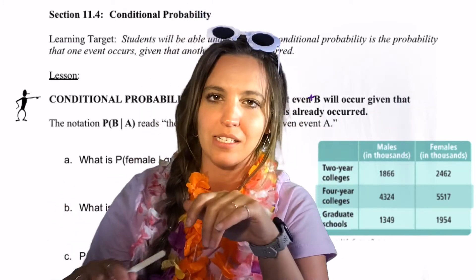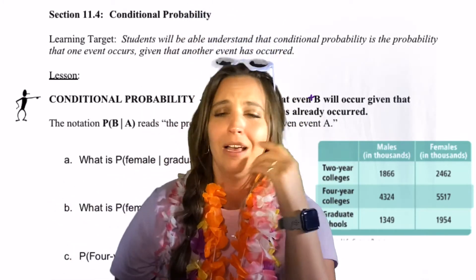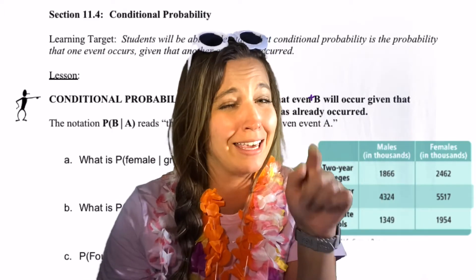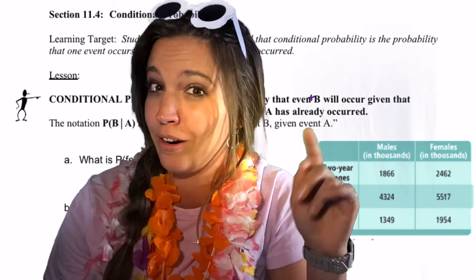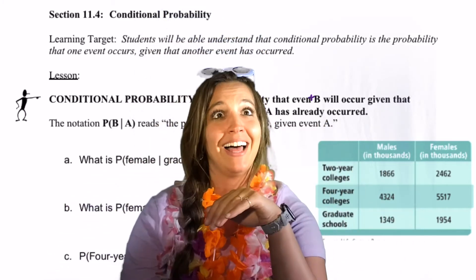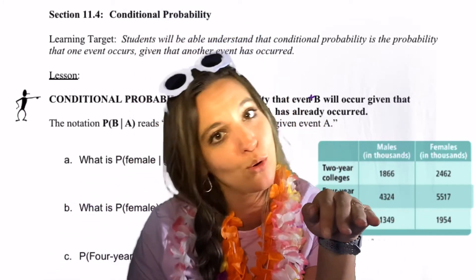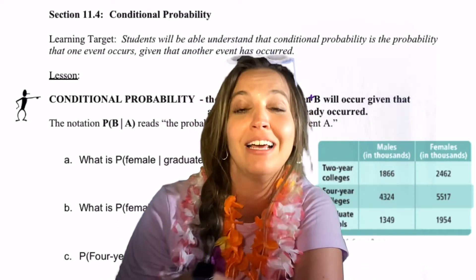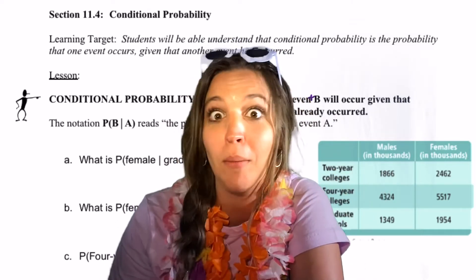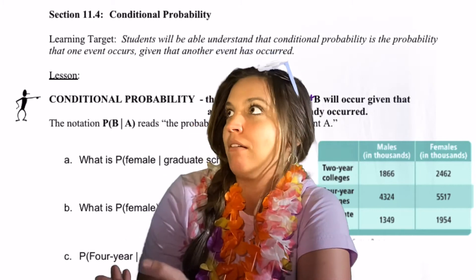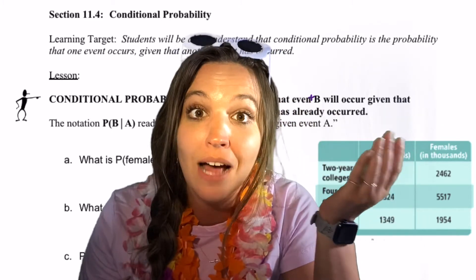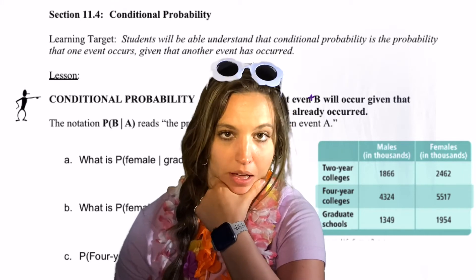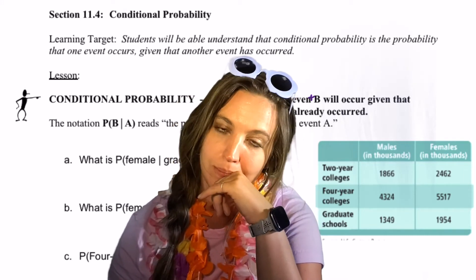Conditional probability is what this lesson is all about. Conditional probability is the probability that event B will occur given that event A already occurred. Like, given that school is out, what's the probability that Miss Ryan is going to be in the sun? Probably pretty high. But given that school is not out, what's the probability Miss Ryan is going to be in the sun and not inside grading or cleaning her classroom?